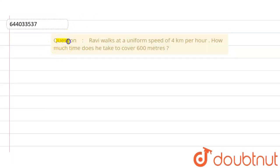Welcome to Doubtnut. The question is: Ravi walks at a uniform speed of 4 km per hour. How much time does he take to cover 600 meters?